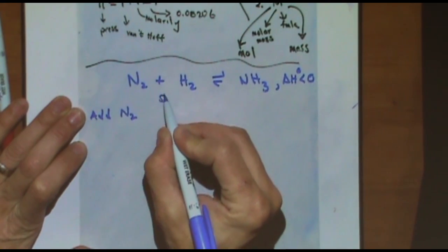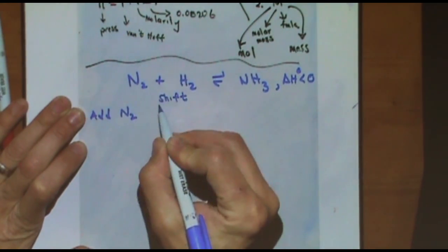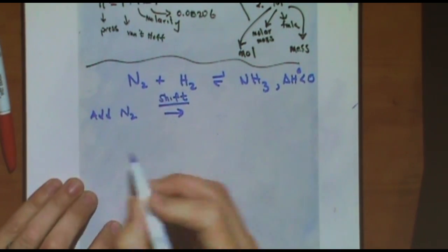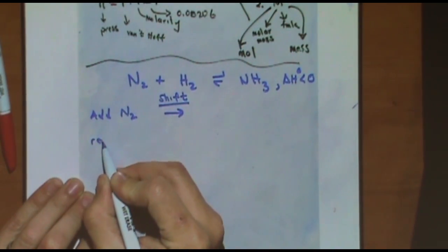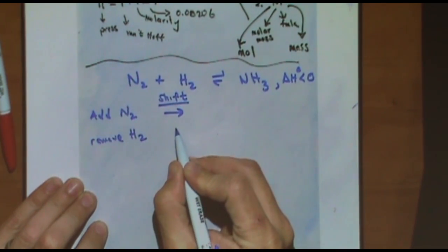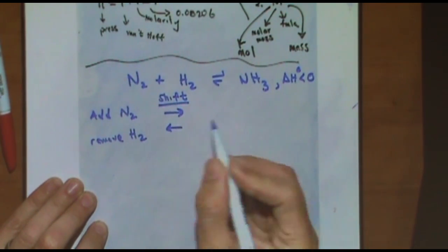All right. So let's say, let's just try a couple things. I want to add N2. Which way? It's going to shift to the right, shifting away. So remove, let's do the easy ones first.